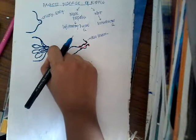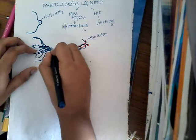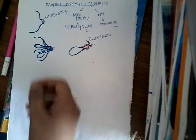Grossly, if you see the nipple and areola, these are crusted, fissured and ulcerated. Because they are crusted, fissured and ulcerated, there is oozing of serosanguinous material — you see a serosanguinous discharge.